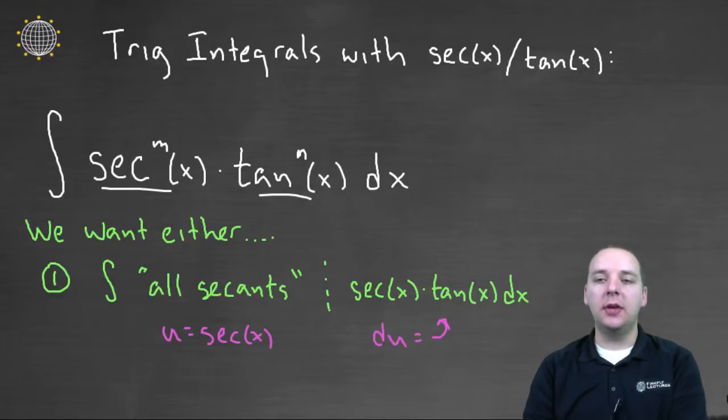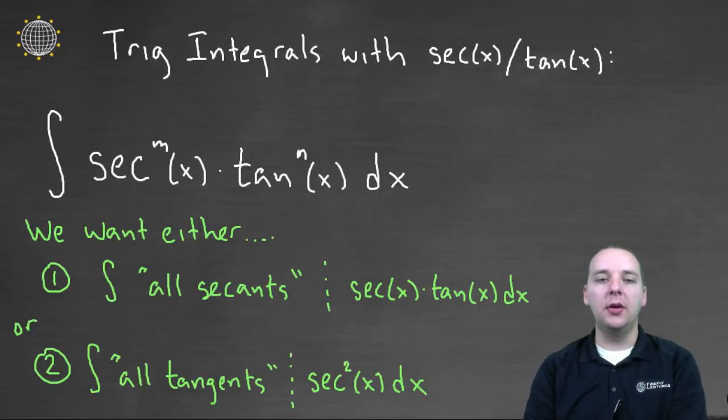So the other option would be if you aren't going to make your integrand in terms of secants then we'll make our integrand in terms of all tangents and we'll save a secant squared at the end. Now you can see why we would want to do that as well. If you can turn the majority of the integrand into tangents then you have tangent this tangent that tangent this tangent that and then u would be tangent and the derivative for tangent is secant squared. And so again you have a function of u du and so that's what we try to do in general.